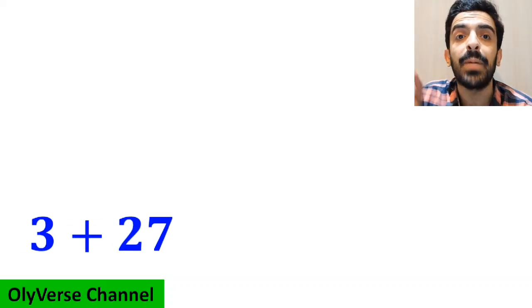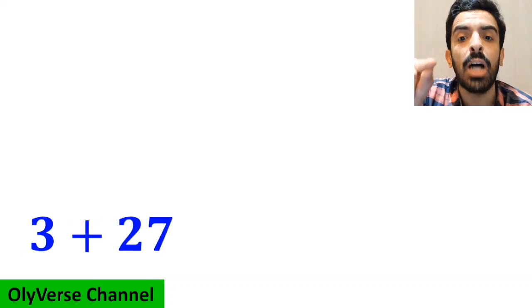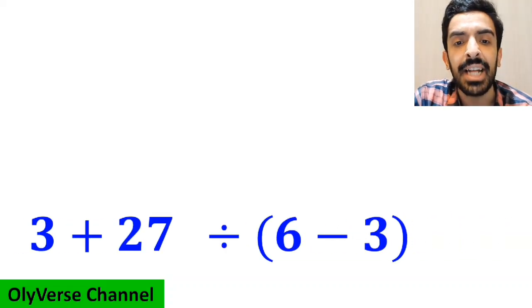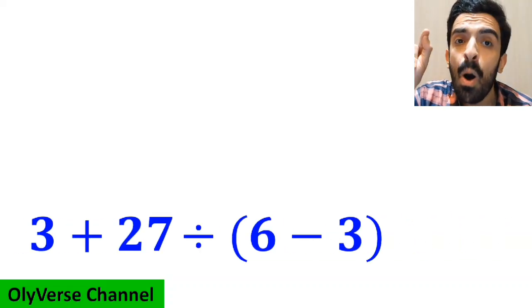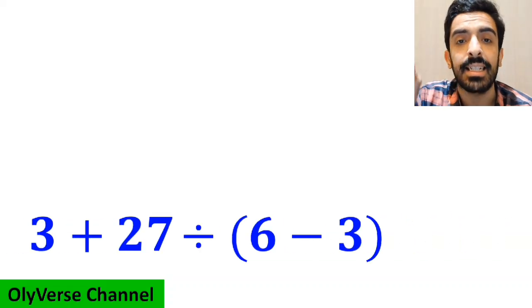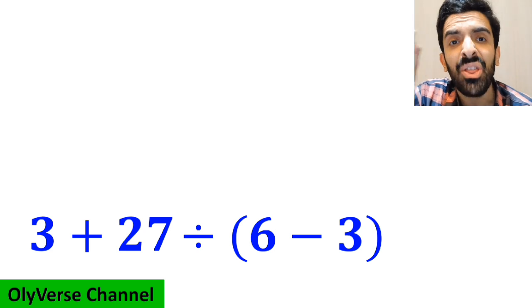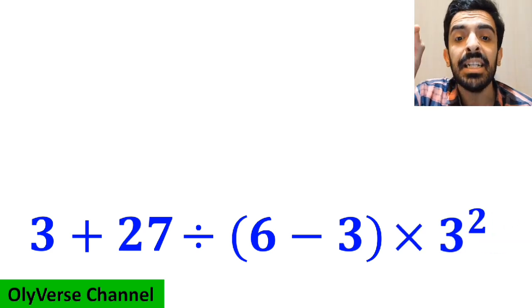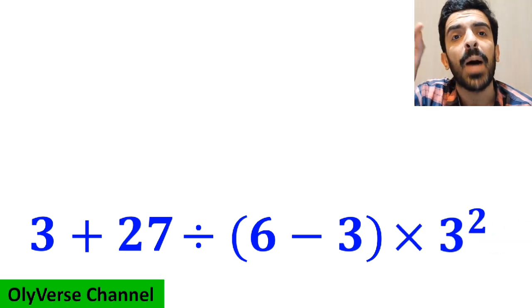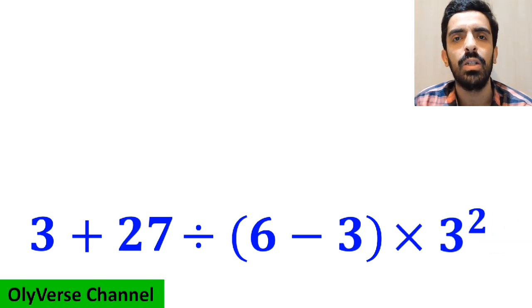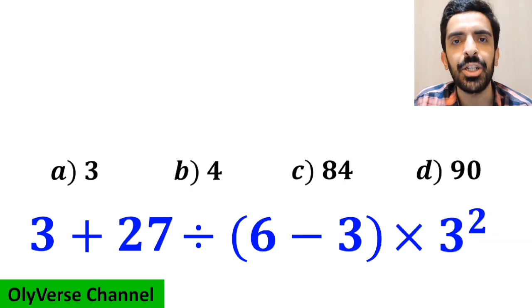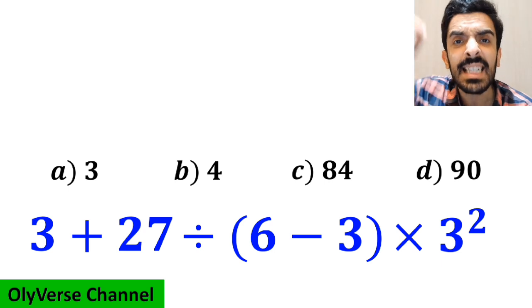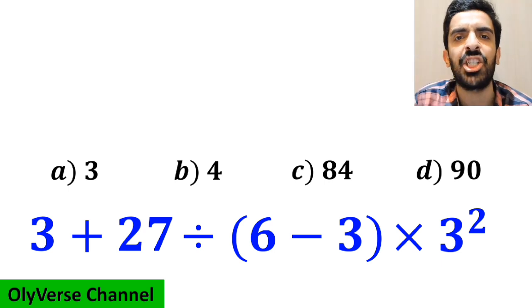What is the value of the expression 3 plus 27 divided by open parenthesis 6 minus 3 close parenthesis, then times 3 to the power of 2? Which option do you think is the correct answer to this question?